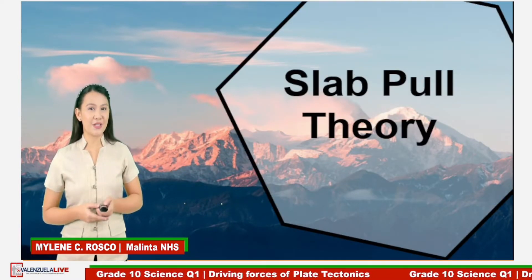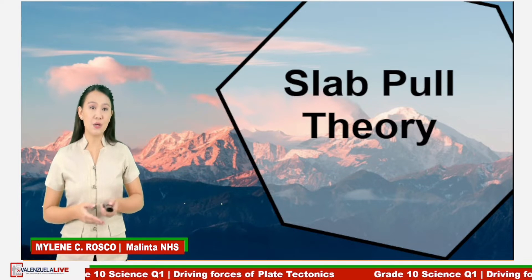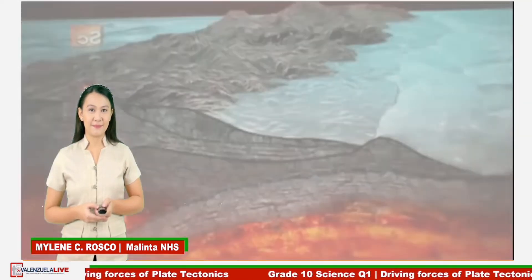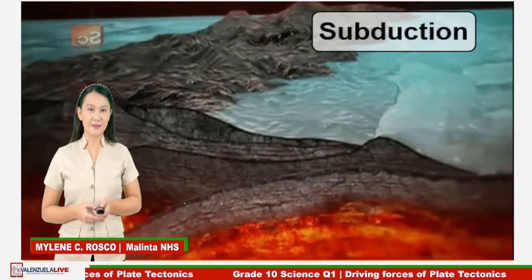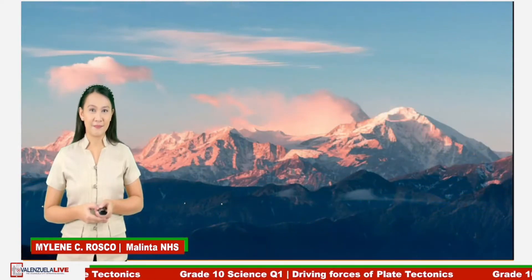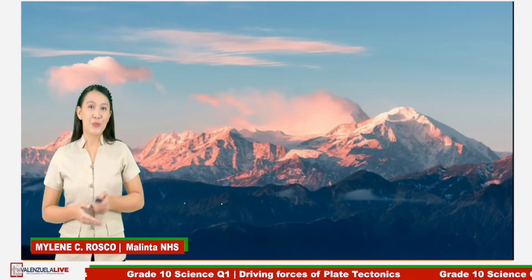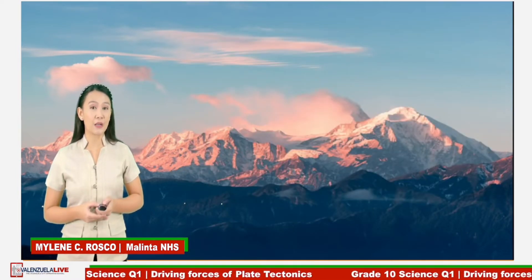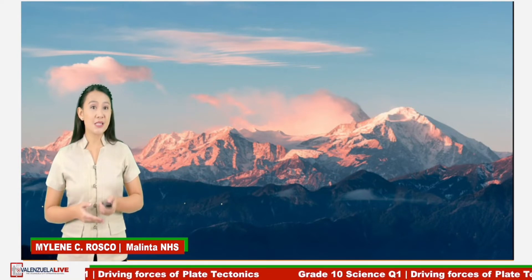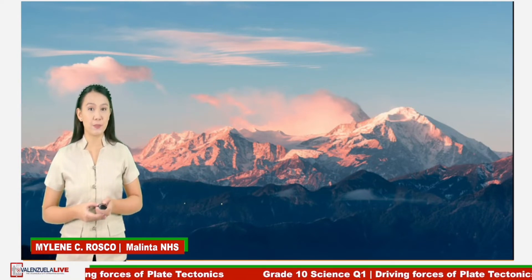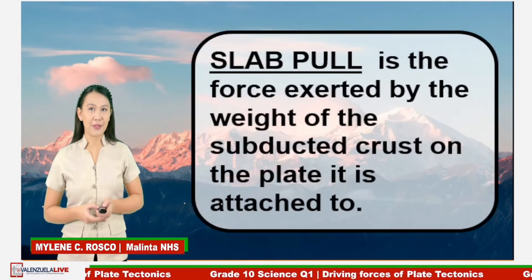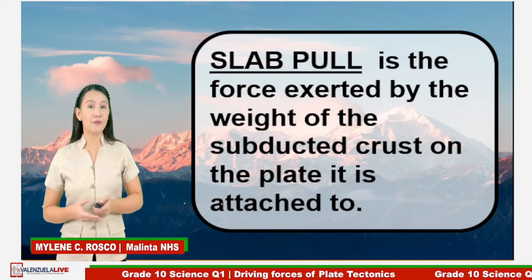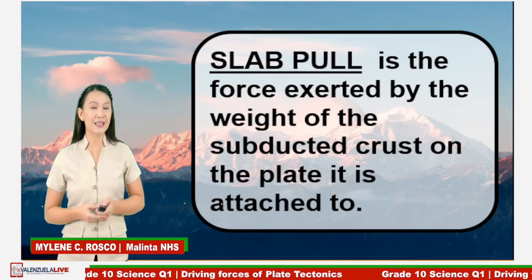Now, that is convection current. Let's move on to the slab pull theory. Remember, in a convergent plate boundary, the denser plate will subduct towards the mantle. This subduction of the plate is explained by the slab pull theory. Slab pull is defined as the force exerted by the weight of the subducted crust on the plate it is attached to.